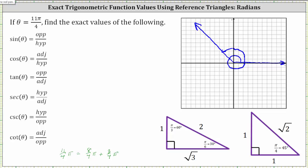The reference angle is the angle formed by the terminal side and the x-axis, which is pi over four radians or one fourth pi radians. Let's go ahead and label that here. Now we pick a point on the terminal side and sketch the reference triangle by drawing a segment perpendicular to the x-axis.